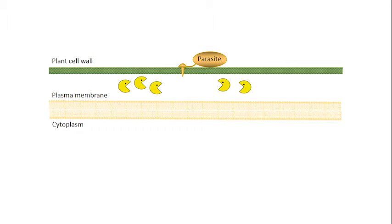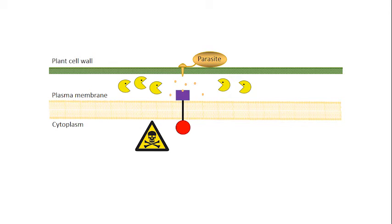That front line comes in the form of chitinases. These chitinases are enzymes, and they're going to chew up bits of the parasite cell wall into smaller pieces. These smaller pieces of the parasite cell wall are then recognized by specific receptors in the plasma membrane. And when one of these receptors recognizes the presence of the parasite cell wall, it sets off alarm bells in the cell, triggering a whole range of complex defense reactions. The end result is the production of toxic compounds, which are transported from the cytoplasm out to where the parasite is trying to infect, and the parasite will be killed.